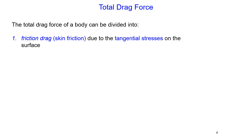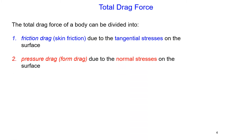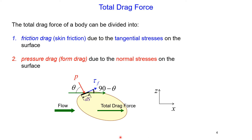The total drag force acting on the body can be divided into two components. First, friction drag, also called skin friction, which is due to tangential stresses acting on the surface of the body. Second, pressure drag, also called form drag, which is due to normal stresses acting on the surface of the body. These two components contribute to the total drag force.